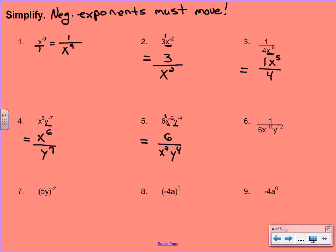Number 6 is kind of just the fraction version of number 5. Our 1 is positive, that's going to stay. Our 6 is positive, that's going to stay. Our x to the negative 10th has to go, so we're going to bring that x to the 10th up to the top. And then on the bottom, the 6 is positive so that's going to stay put, and our y to the 12th is also going to stay there.